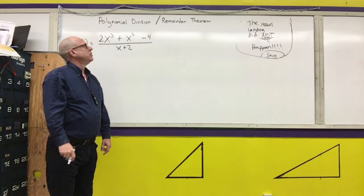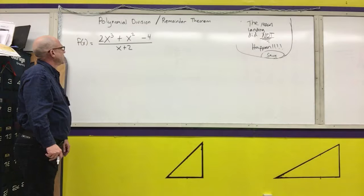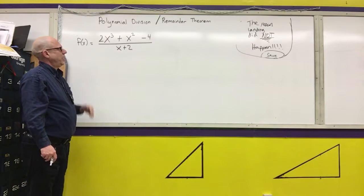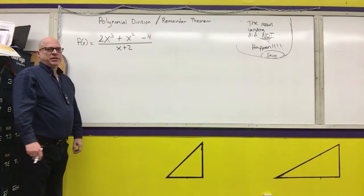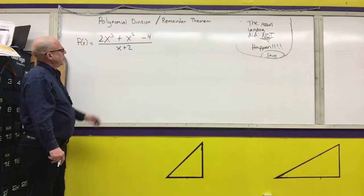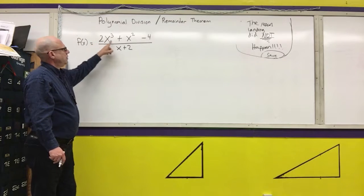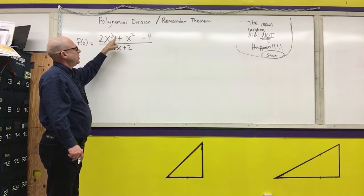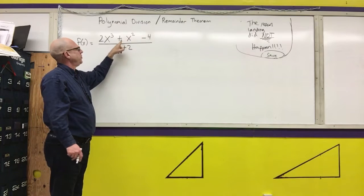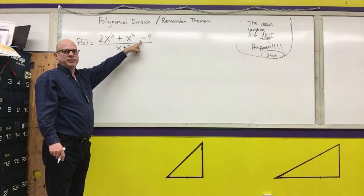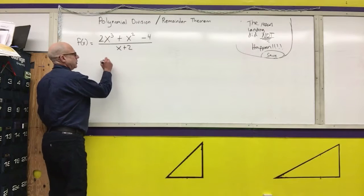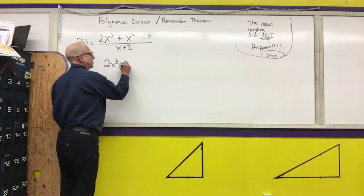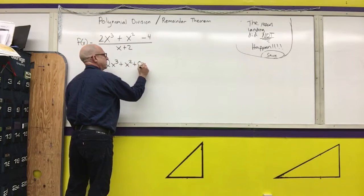Next, we're going to cover polynomial division and the remainder theorem. The first problem I want to do is 2x cubed plus x squared minus 4 divided by x plus 2. The first type of division we're going to do is polynomial long division. For polynomial long division, you're going to write your numerator in standard form, highest degree term first. We're going to put a 0 for each coefficient for the missing terms — I'm missing the x term, so I'm going to write it as plus 0x. So I write out 2x cubed plus x squared plus 0x minus 4.